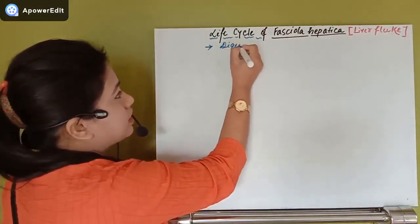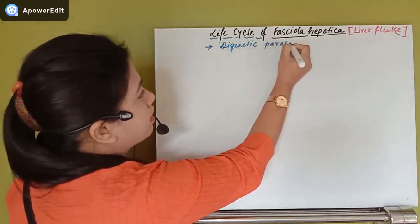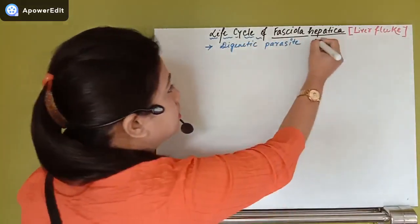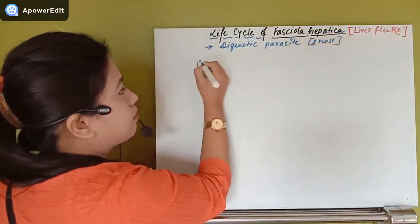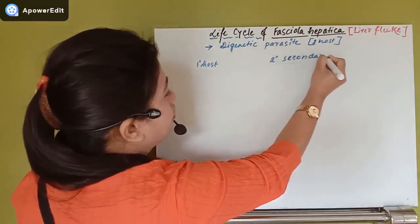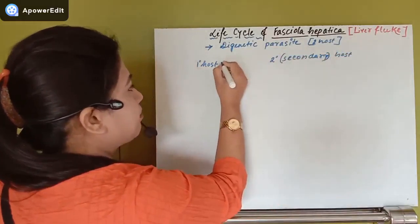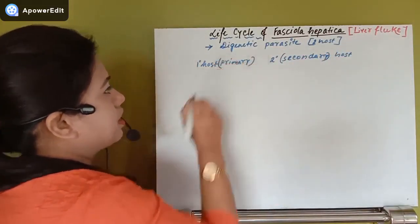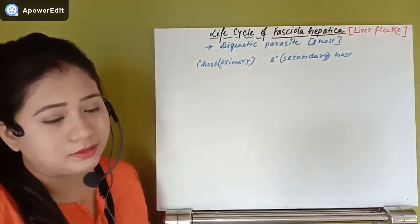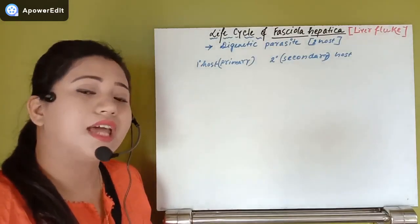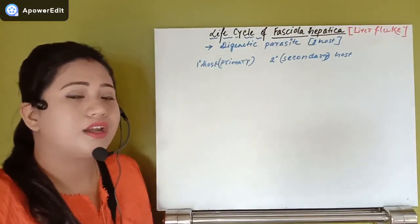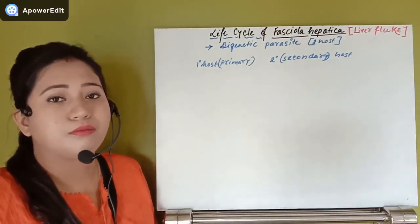Fasciola hepatica is a digenetic parasite, meaning it has two hosts. One is the primary host and the other is the secondary host. The host in which the parasite completes its sexual life cycle — where gamete formation takes place — is known as the primary host.